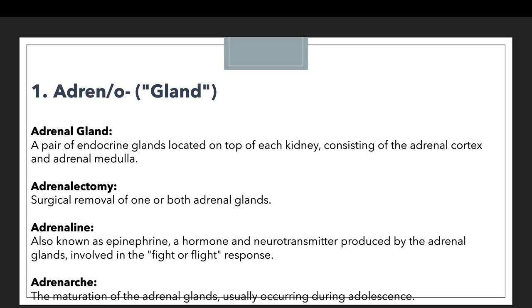The next example is adrenalectomy. Adrenalectomy is the surgical removal of one or both adrenal glands. Whenever we are surgically removing glands from the body, we denote this process with the terminology adrenalectomy. If you've been following the complete series, you'll recall that whenever we talk about ectomy, something is being removed through a surgical process — and here the gland is what is being removed.